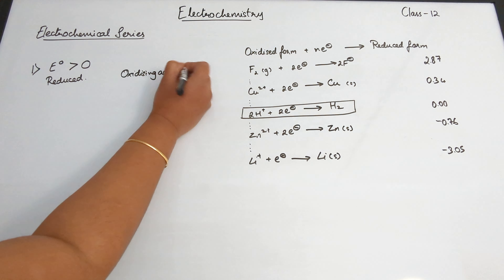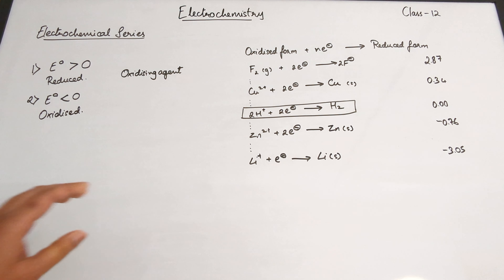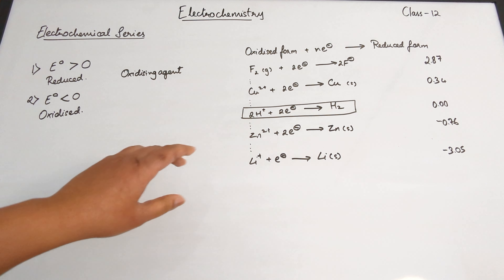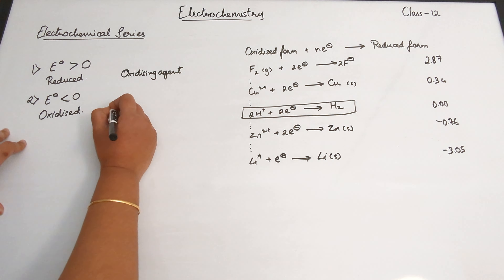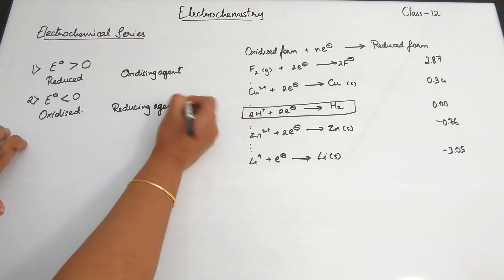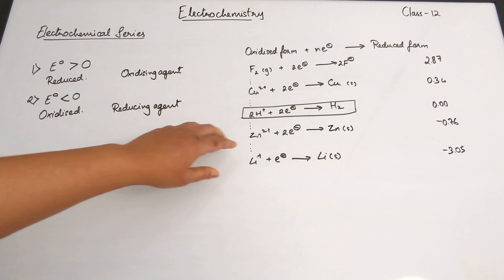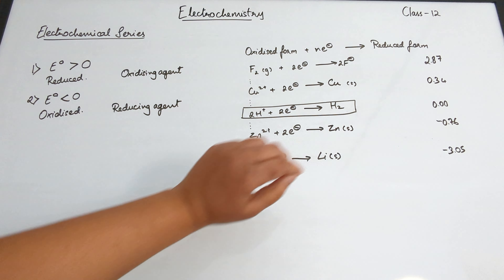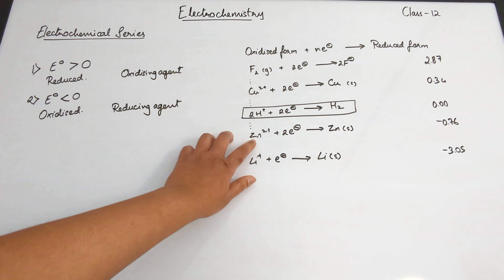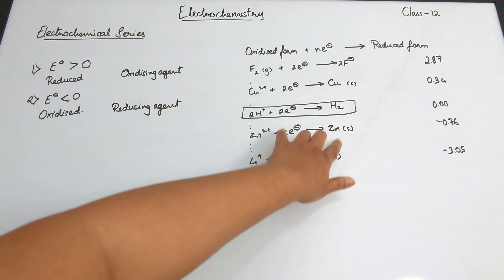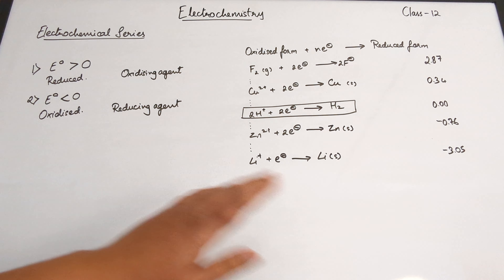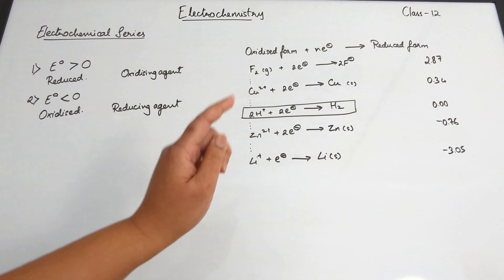The first case is where the standard electrode potential of the electrode is greater than zero. So above the hydrogen electrode, you have Cu²⁺ plus two electrons gives rise to Cu, and the electrode potential is 0.34 — so it is higher than zero.